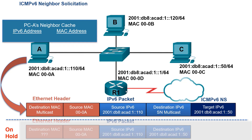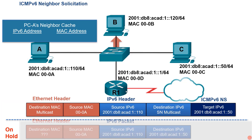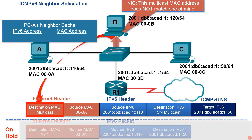The ICMPv6 Neighbor Solicitation Message is forwarded by Host A and received by the switch. The switch will flood the Ethernet multicast frame out all ports except the incoming port. Host B receives the Ethernet frame. Host B's Ethernet NIC examines the destination MAC address. The NIC will accept frames whose destination MAC address matches the MAC address on the NIC, is a broadcast MAC address, or is a multicast MAC address that maps to one of its IPv6 addresses. In this case, the multicast MAC address does not match any of these, so Host B's NIC ignores the rest of the frame without having to pass it up to an upper-level process. Again, this is an advantage over ARP for IPv4.